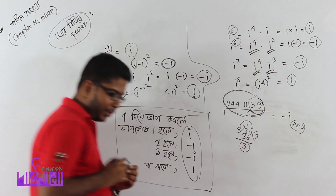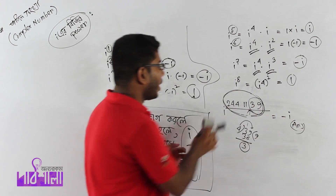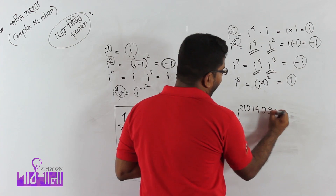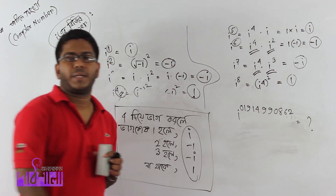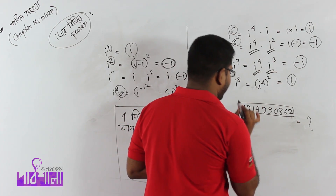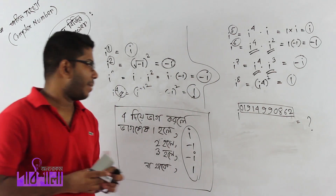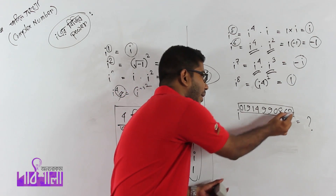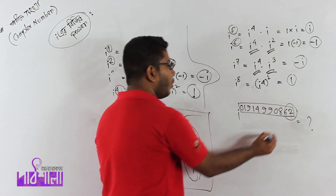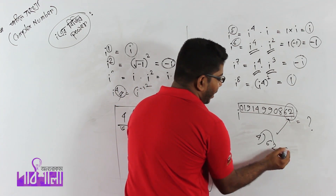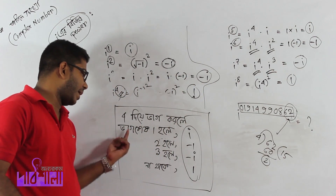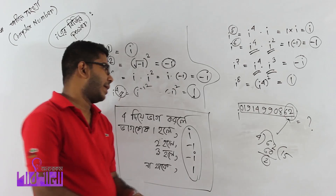The result is minus i. So the value is minus i. The value is easy. What is the value of i to the power 191499862? When you get the value, the value comes out to be 6. The value is minus i. So what is the value? That value is minus i. You can see that the value is minus i.